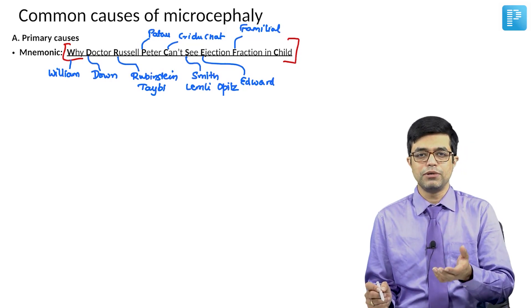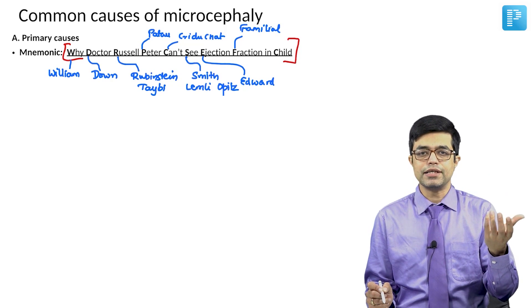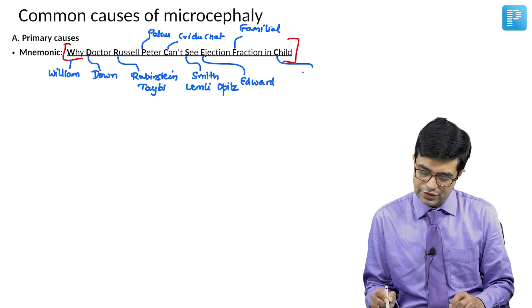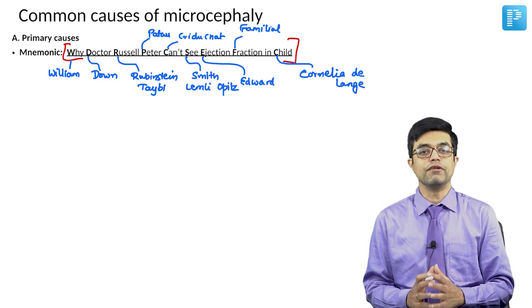F stands for familial microcephaly. Otherwise no problem is there, but due to genetic reasons, every person in the family has head circumference less than minus 3 standard deviations. And finally we have C, which stands for Cornelia de Lange syndrome. These are the common important genetic causes of microcephaly.